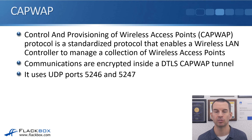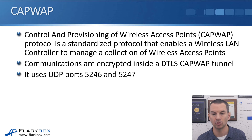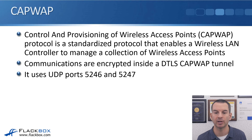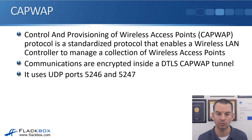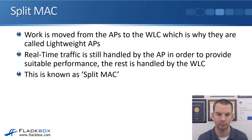The protocol used for communications between the wireless LAN controller and the access points is CAPWAP — Control and Provisioning of Wireless Access Points. It's an open standard protocol that enables your WLC to manage the APs. With CAPWAP, communications are encrypted inside a DTLS CAPWAP tunnel and it uses UDP ports 5246 and 5247. If you have a firewall between your WLC and an AP, make sure those ports are open.